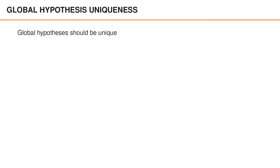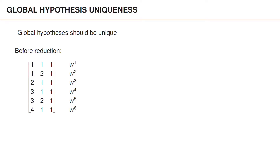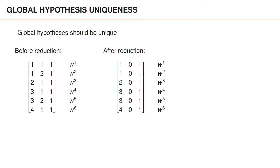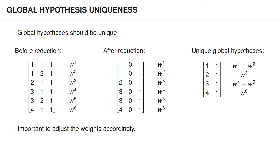It is important that the global hypotheses are unique. For example, say that before doing any reduction, we have the lookup table shown here with six multi-Bernoullis with weights W1 to W6. Now let's say that in the reduction, we prune the second Bernoulli entirely. If we look closely, we see that the lookup table only has four unique rows — four unique multi-Bernoullis or global hypotheses. The first two are identical and the fourth and fifth are also identical. Therefore, we should adjust the lookup table so that it only contains the unique multi-Bernoullis, and it is important that we remember to adjust also the weights as shown here.